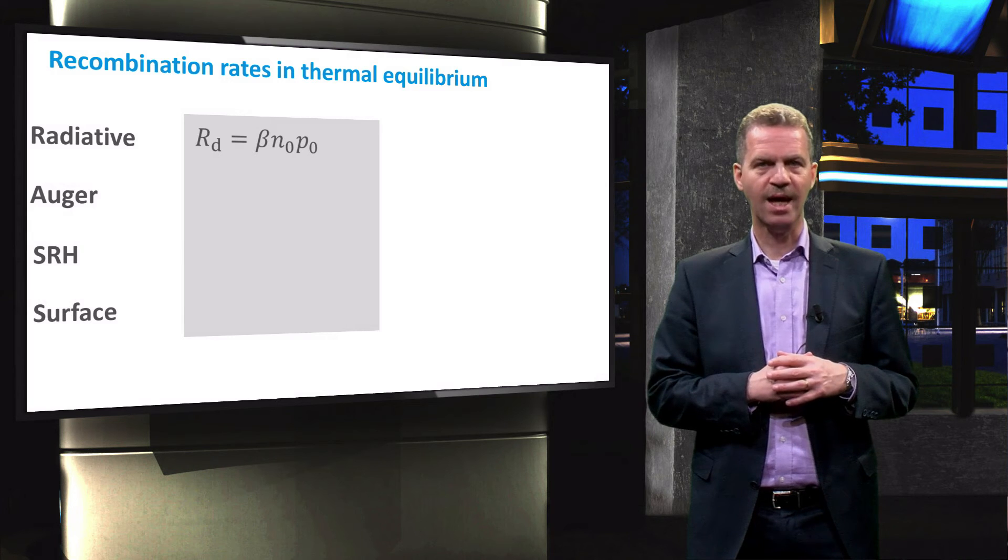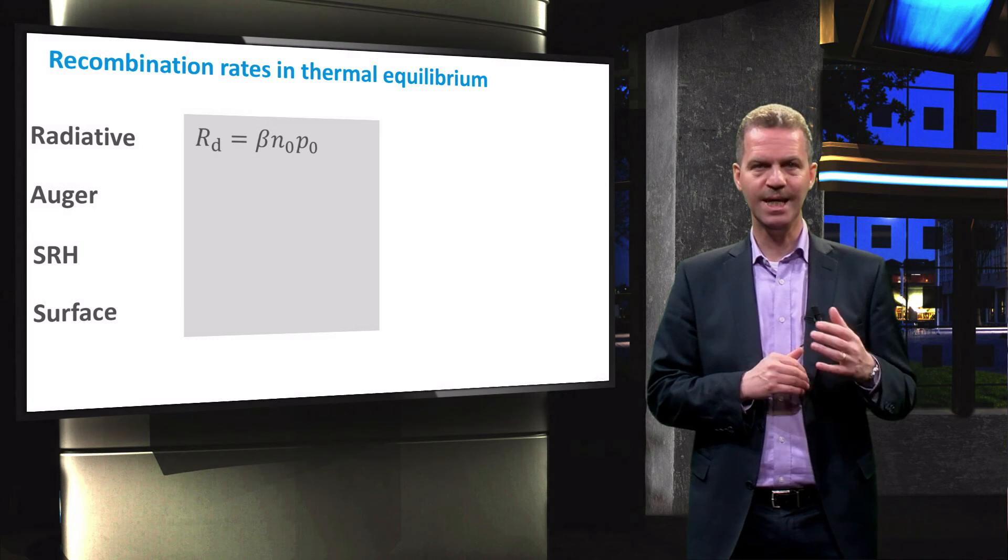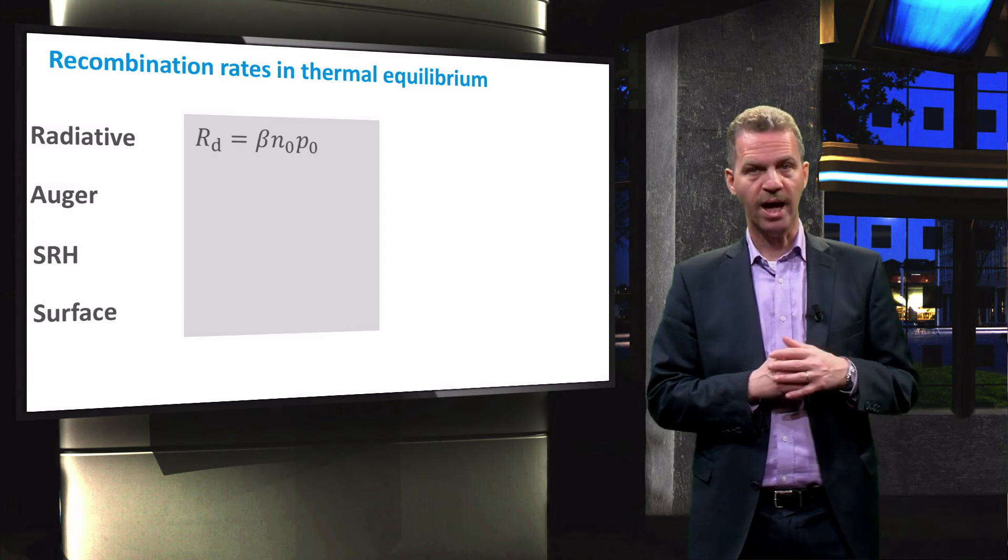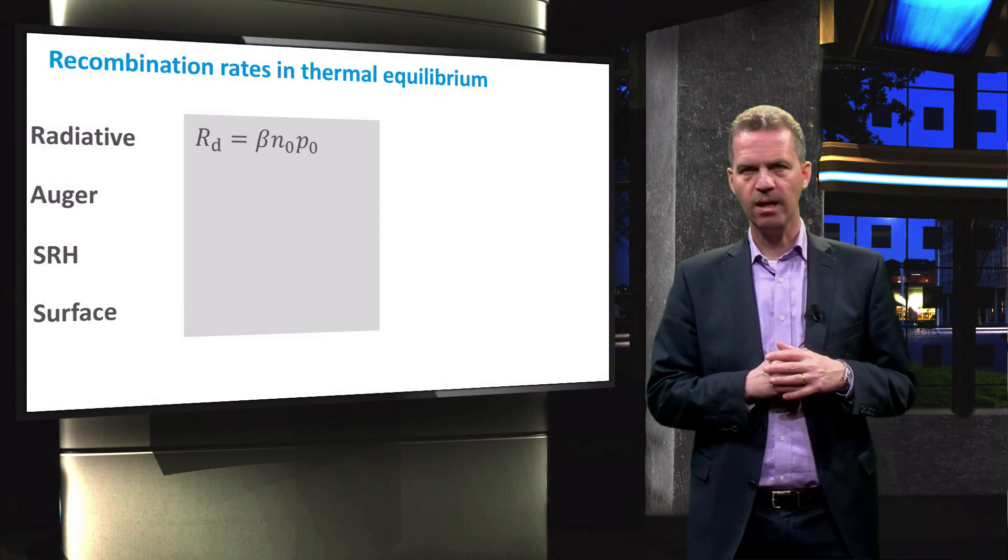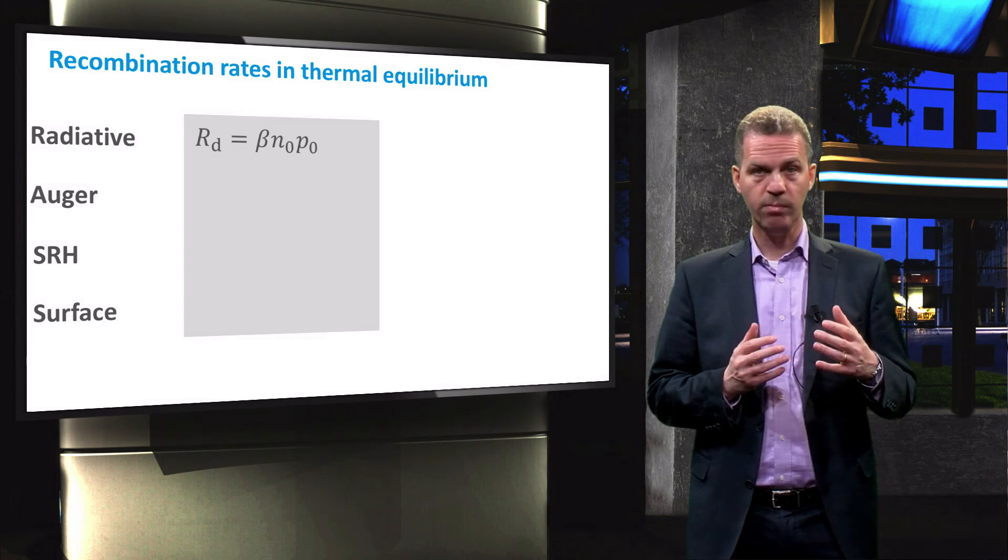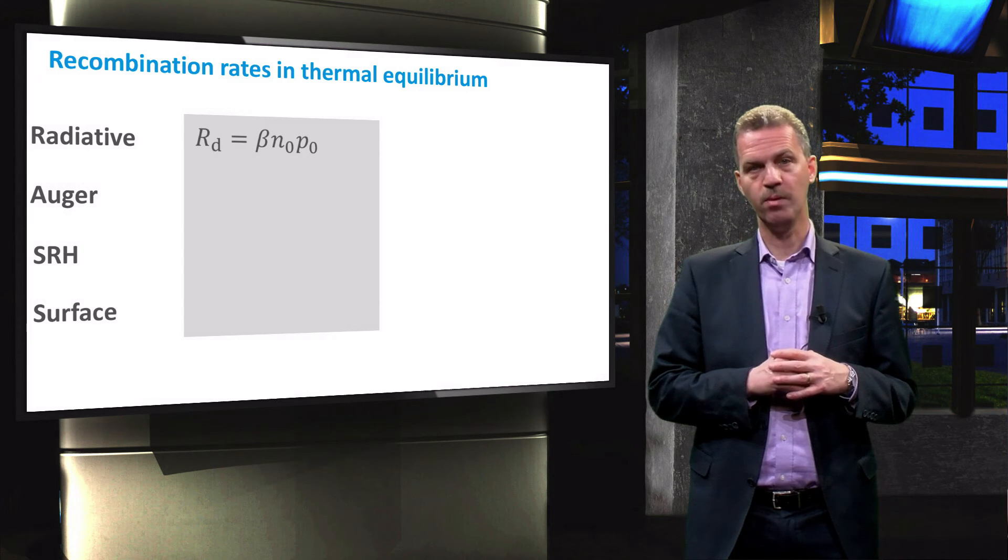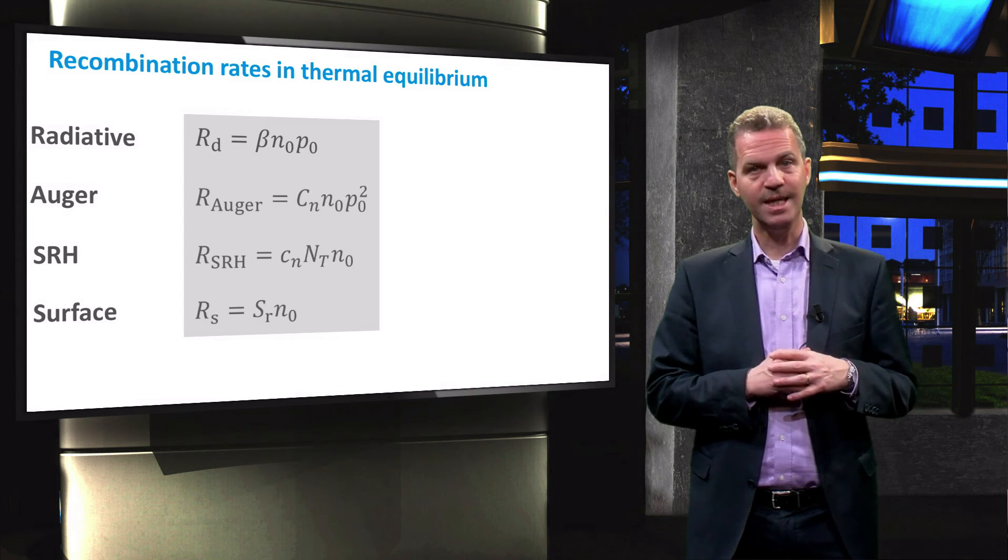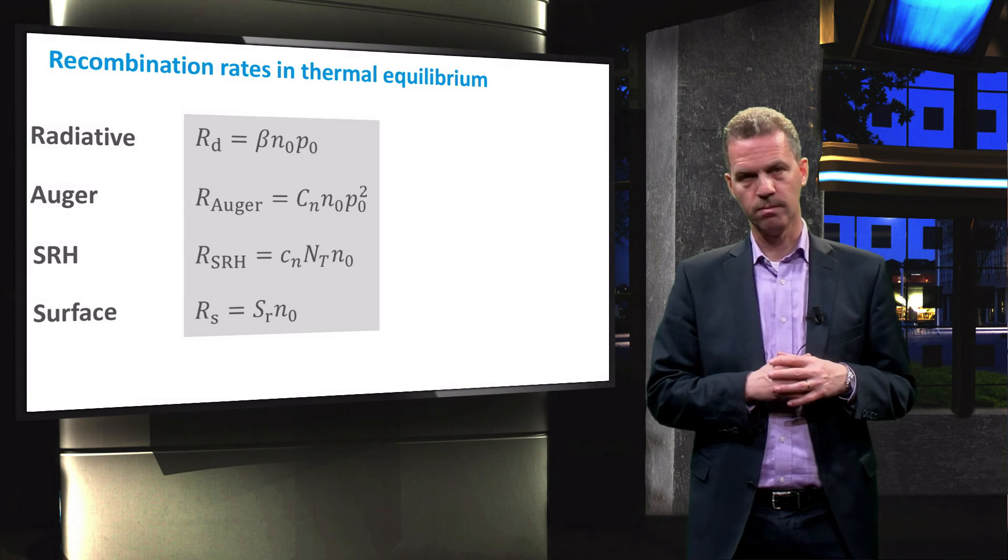Before we move to J0, we first look again at the recombination rates for each mechanism but then for thermal equilibrium. In that case, we see that for radiative recombination, the rate simply depends on the thermal equilibrium carrier concentrations. We can extend this easily to the other recombination mechanisms.